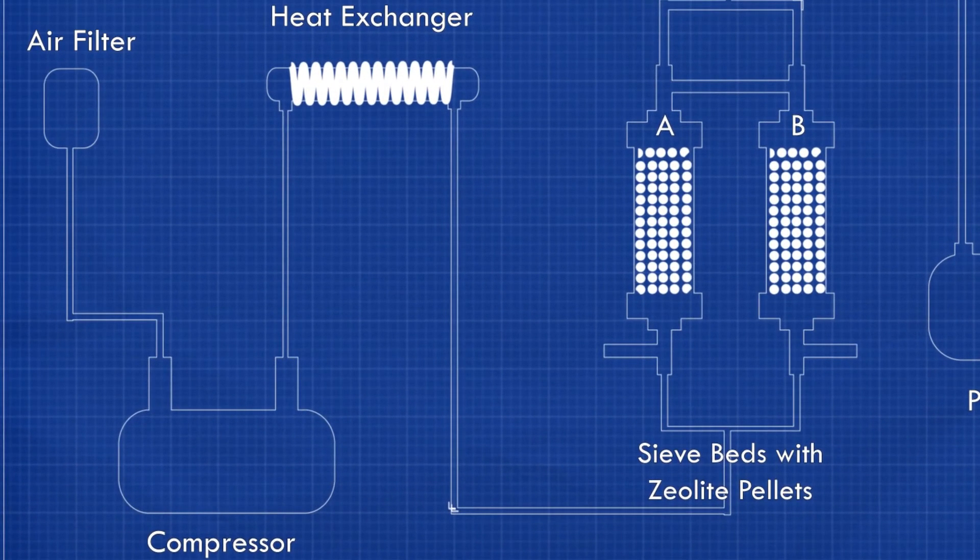First, the air filter filters out large impurities such as dust and pollen. This filtered air is passed on to the compressor. The compressor compresses those gases to high pressures. This compressed air is then sent to the heat exchanger to cool down the hot compressed air.